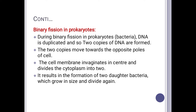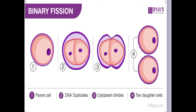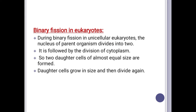In prokaryotes and bacteria, the daughter bacteria are the exact copies of their parent bacterium — meaning their cytoplasm is exactly the same and the DNA content is also the same as in the parent cell. As you can see here: first there is a parent cell, then DNA duplicates inside it, then cytoplasm divides, then the cell membrane invaginates from the middle — due to which one parent cell divides into two cells. Those two daughter cells are the exact copy of their parent cell.